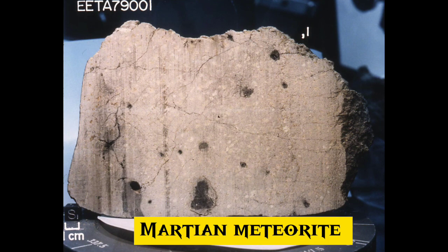17. A Martian meteorite is a rock that formed on Mars, was ejected from the planet by an impact event, and traversed interplanetary space before landing on Earth as a meteorite. As of September 2020, 277 meteorites had been classified as Martian — less than half a percent of the 72,000 meteorites that have been classified.